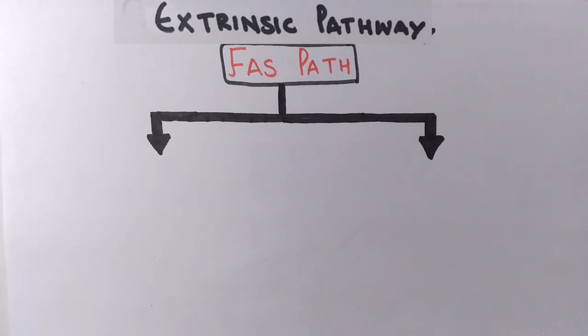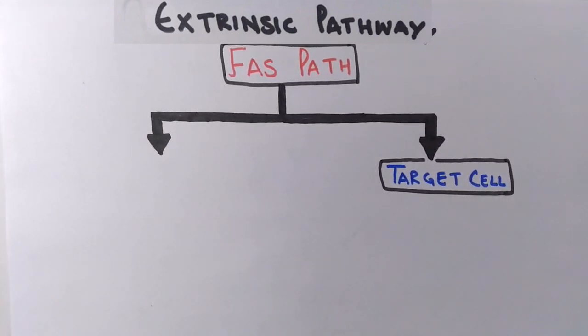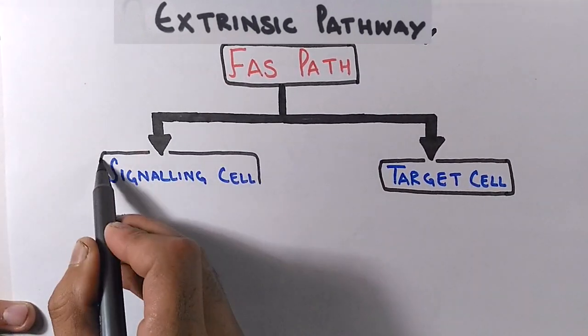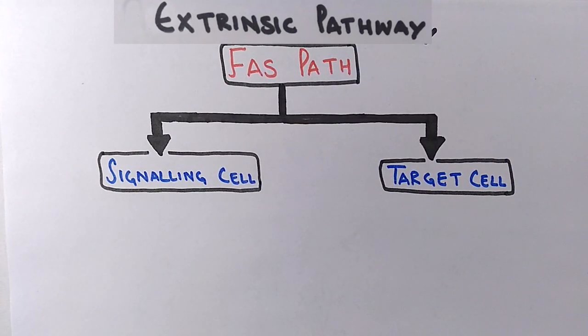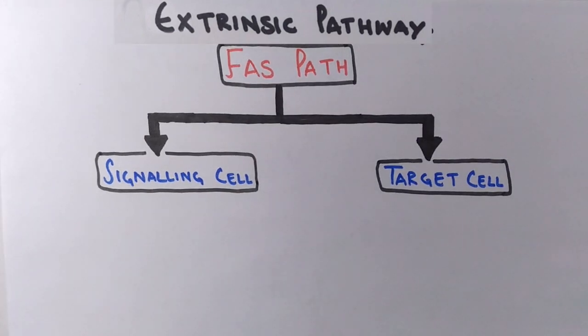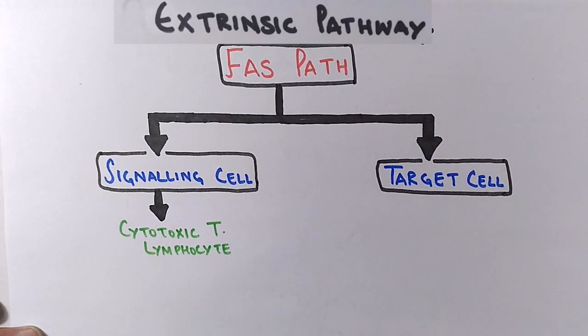In this FAS pathway we have two different cells. One is the target cell which is going to be killed by the process of apoptosis, and we have another cell in that process called signaling cell which is going to kill the target cell through a signaling molecule. Here in that case, the signaling molecule is FAS ligand.